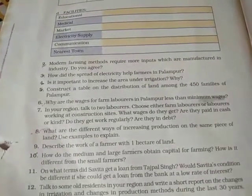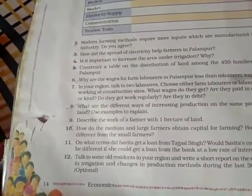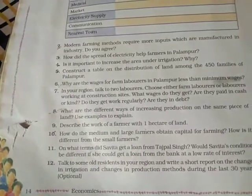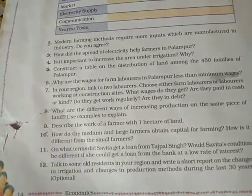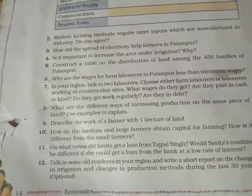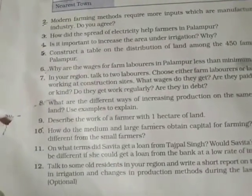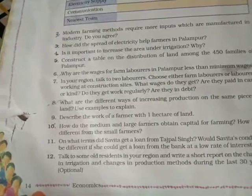Question eight: What are the different ways of increasing production on the same piece of land? First, multiple cropping — the most common method, meaning two or more crops are grown on the same piece of land during a year. Indian farmers should grow at least two main crops per year; some grow a third crop, as in Palampur where Jowar, Bajra, and potato are grown. Second, modern farming methods, including the Green Revolution, can also increase production on the same piece of land.